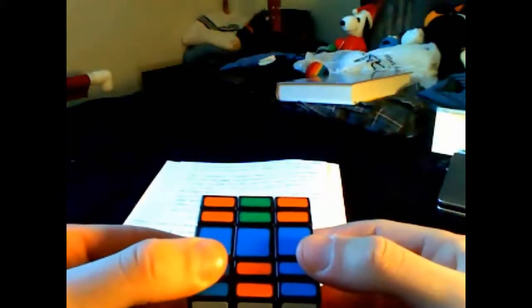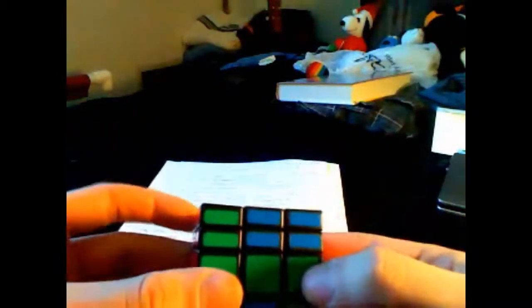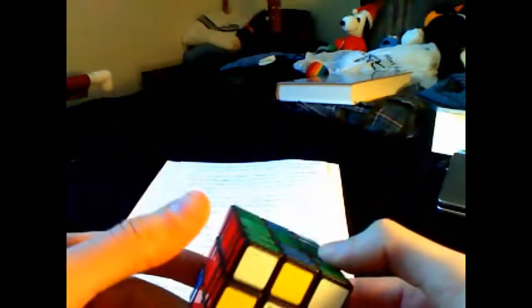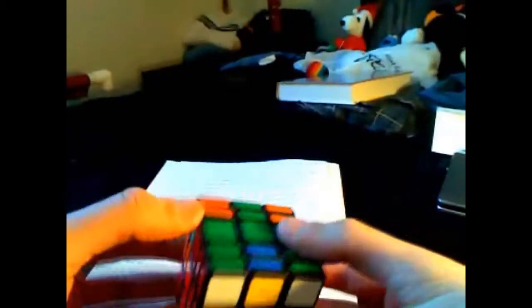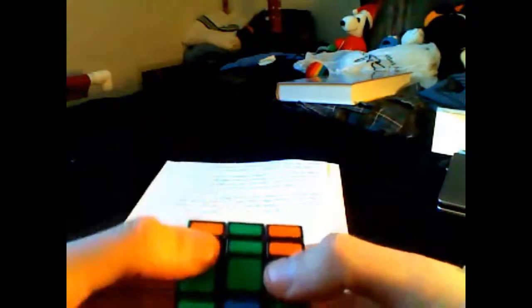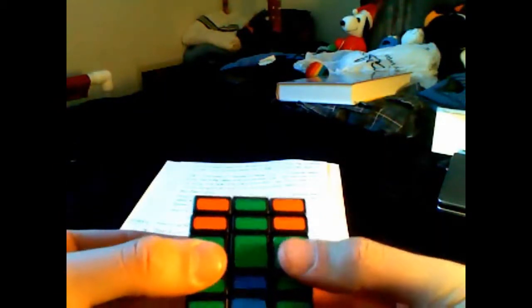In this step, we will bring the four bottom edges to the rightful place on the 3x3. To do this, all we need to do is place an edge directly above its spot. We're going to bring this white-green edge here. We're just going to do that vertical edge switch.